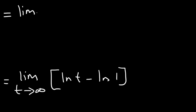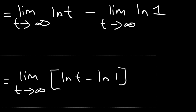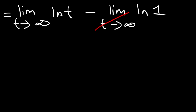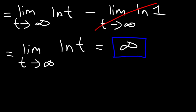So it's ln(t) minus ln(1). Now ln(1) is simply 0, so we can get rid of that expression. All we have is the limit as t approaches infinity of the natural log of t. The natural log of infinity is infinity. Because we don't have a finite number, this particular improper integral is divergent — it doesn't converge.